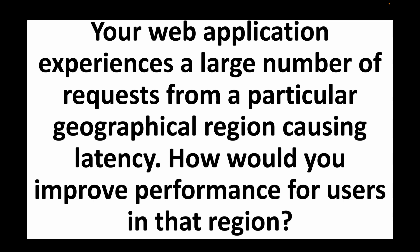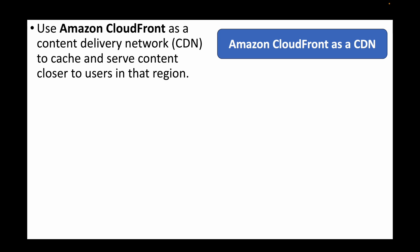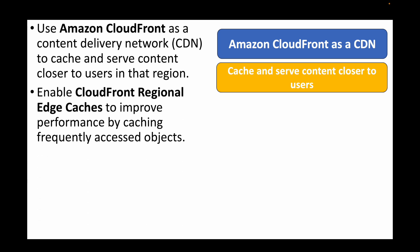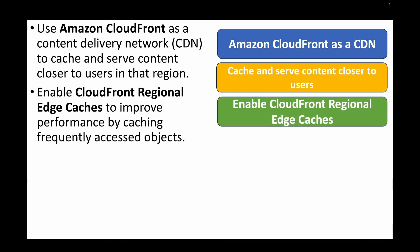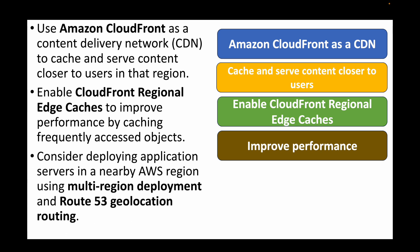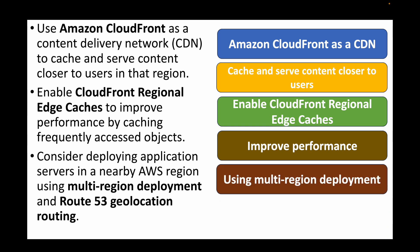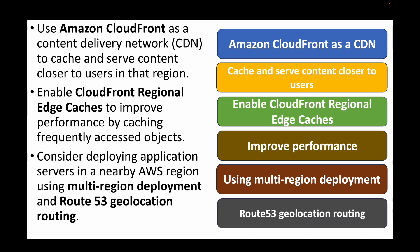The next question is: your web application experiences high request volumes from a particular geographical region causing latency — how would you improve performance for users in that region? We can use Amazon CloudFront as a CDN to cache data and serve it to users in that region. Enabling CloudFront regional edge caches improves performance for frequently accessed objects. We can also consider deploying application servers in a nearby AWS region using multi-region deployment, and use Route 53 geolocation routing policies to route traffic based on user location.